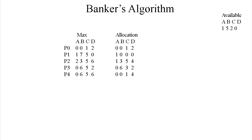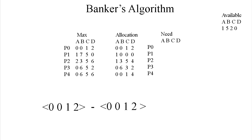First, we're going to set this up and swap the max and allocation so that it's more intuitive when we're doing the subtraction. We're going to grab 0, 0, 1, 2 and subtract 0, 0, 1, 2 from it. You go from left to right, doing the arithmetic on the numbers in the same position, and this is going to end up being 0, 0, 0, 0, which gets filled in right there.